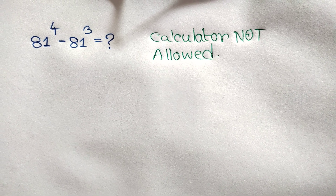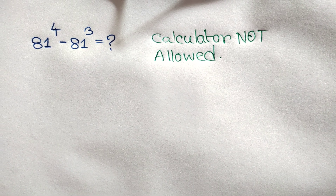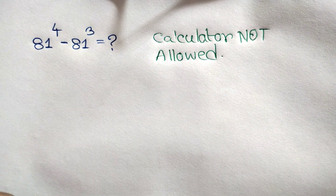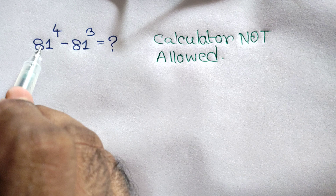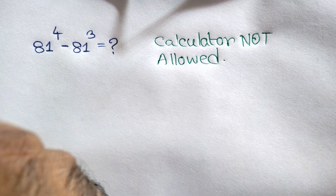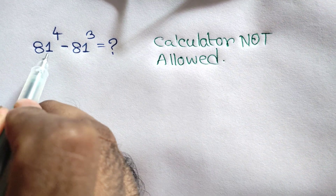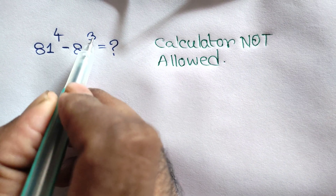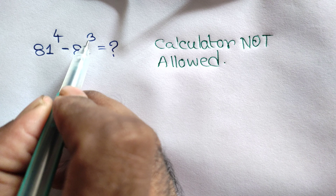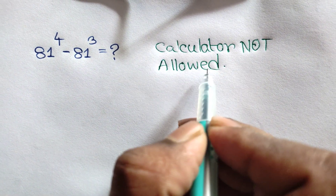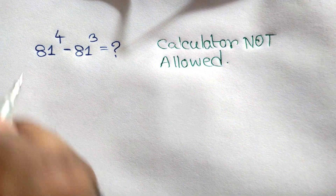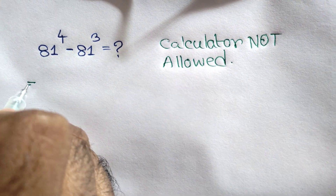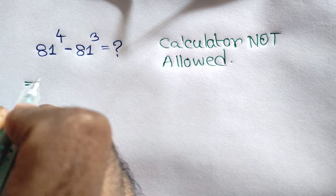Hi everyone. In this video I am going to show how to simplify this math olympiad problem where 81 to the power 4 minus 81 to the power 3, calculator not allowed, is equal to 81.